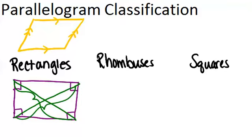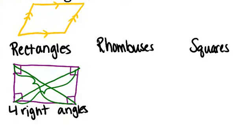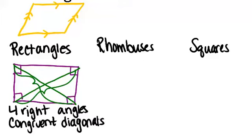So about rectangles, you should remember: four right angles, that's the real definition. But also, rectangles will always have congruent diagonals. So if you can show that a parallelogram has congruent diagonals, it must actually be a rectangle as well.